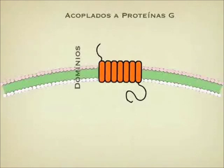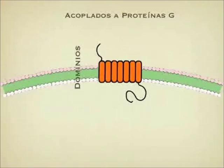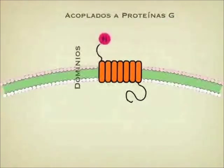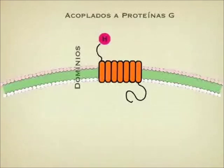Our transmembrane domain has seven parts. Our receptor specifically acts as a receptor for our first messenger — in this case, a hormone — and will work as a transductor, translating the information of this first message to the inside of the cell.